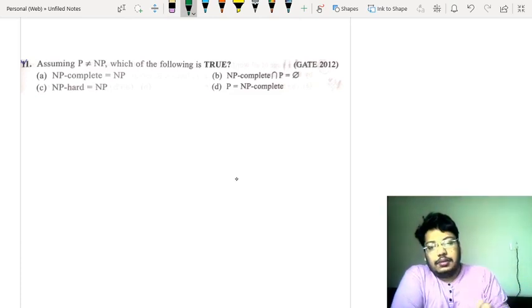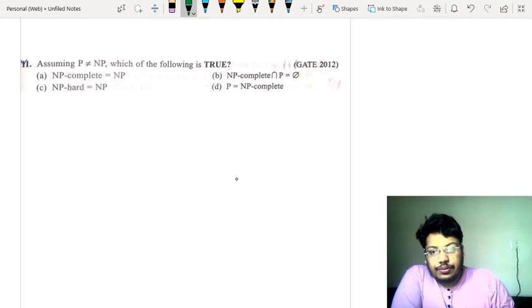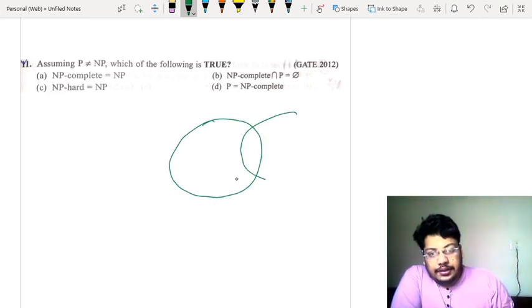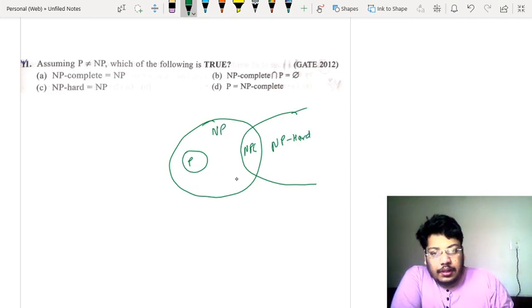Let me first mention the decidability and undecidability diagram. The diagram goes like this: here we have P, this set is called NP, this is called NP-complete, and this is called NP-hard. This is open.